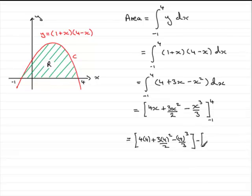minus what we get when we substitute the minus 1 in for x, which will be 4 times minus 1, plus 3 times minus 1 squared over 2, and then minus, minus 1 all cubed over 3, and that will be in the square bracket.